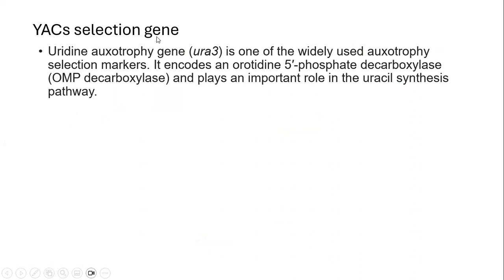The commonly used selection gene in yeast artificial chromosomes includes the uridine auxotrophy gene URA3. The host cells used are unable to synthesize uracil because they lack the URA3 gene, and as a result they are unable to encode the enzyme orotidine phosphate decarboxylase, which plays an important role in the uracil synthesis pathway. The chromosome contains the URA3 gene, so yeast cells that have taken up the yeast artificial chromosome will be able to grow in the absence of a preformed source of uracil. This acts as a selection marker for the yeast artificial chromosome.